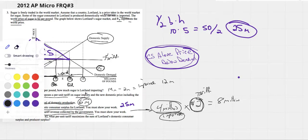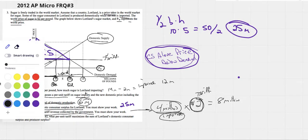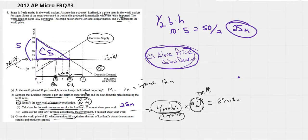The last one is a tricky one. Given the world price of $2, what per unit tariff maximizes the sum of Loreland's domestic consumer surplus and producer surplus. So really, we're sort of asking about what's the net gain here? What would we do? What tariff would maximize consumer and producer surplus? Understand that if I give you a supply and demand curve and I ask you that same question, where is consumer surplus and producer surplus maximized? It is right there where PE and QE come together.